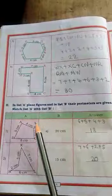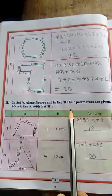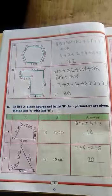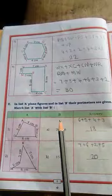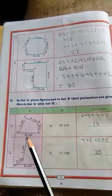Now come to the second one. In list A plane figures and in list B their perimeters are given. Match list A with list B. This is the geometrical figure.